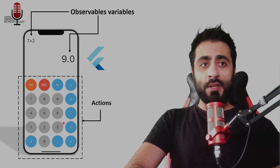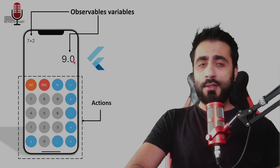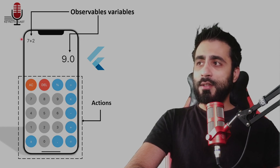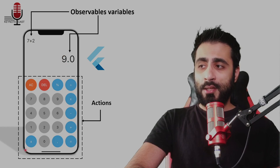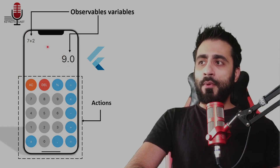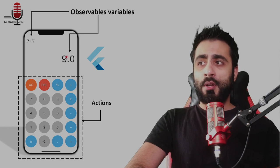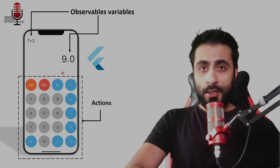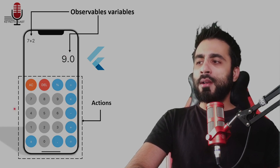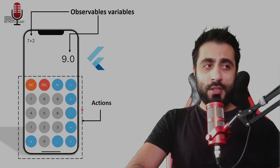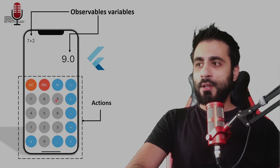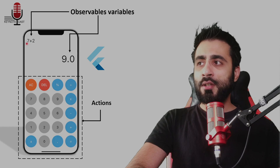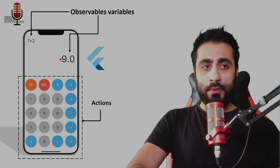The calculator will be divided into two parts: the first part is the formula and the result, and the second part is the buttons. The formula and result will be observable variables — variables that will change value and reflect on the screen. The bottom part is static; it only triggers actions. So the 9 button will trigger the 9 action to the formula, and equals will trigger the calculation and show the result.